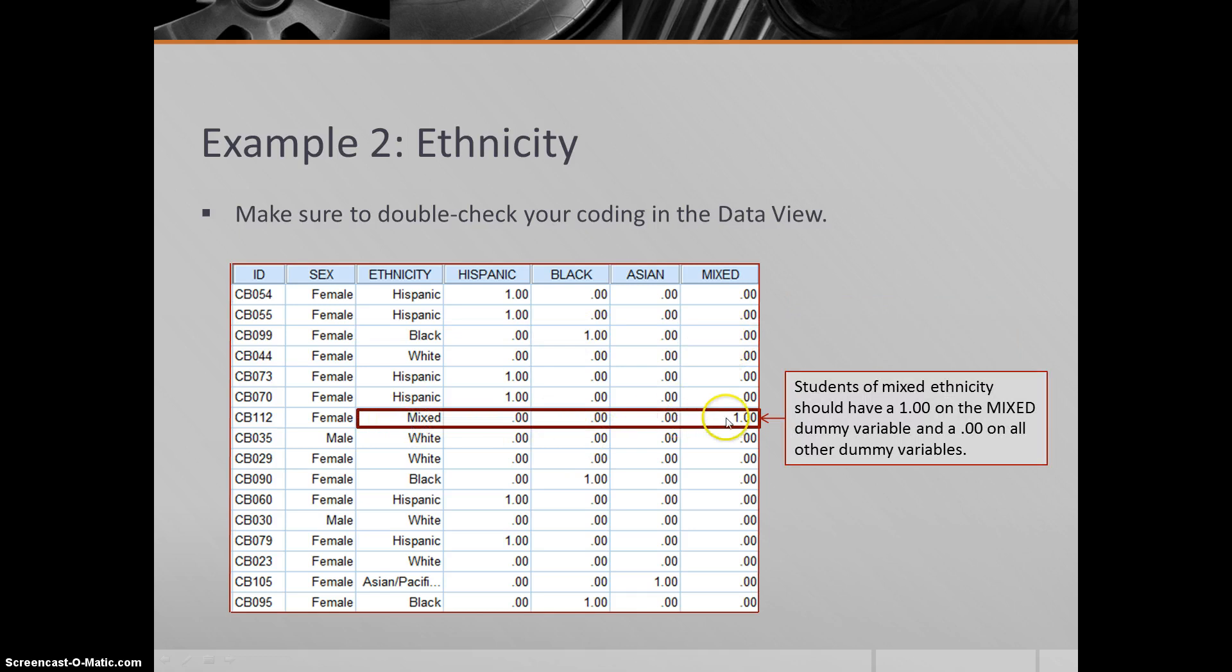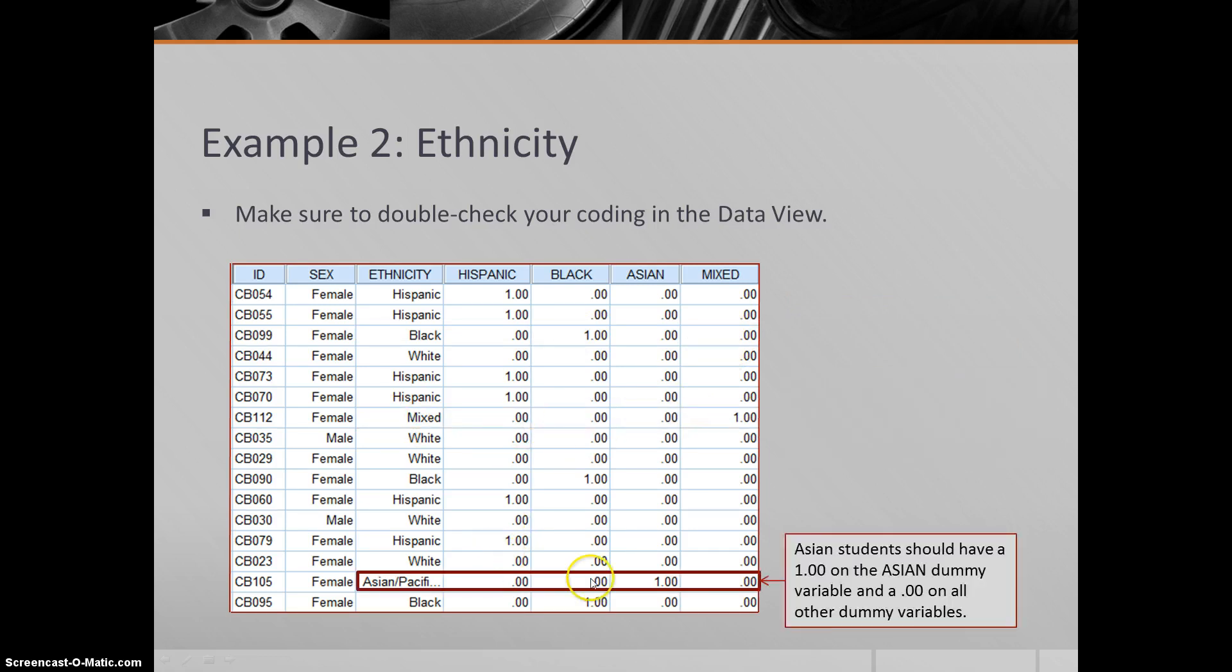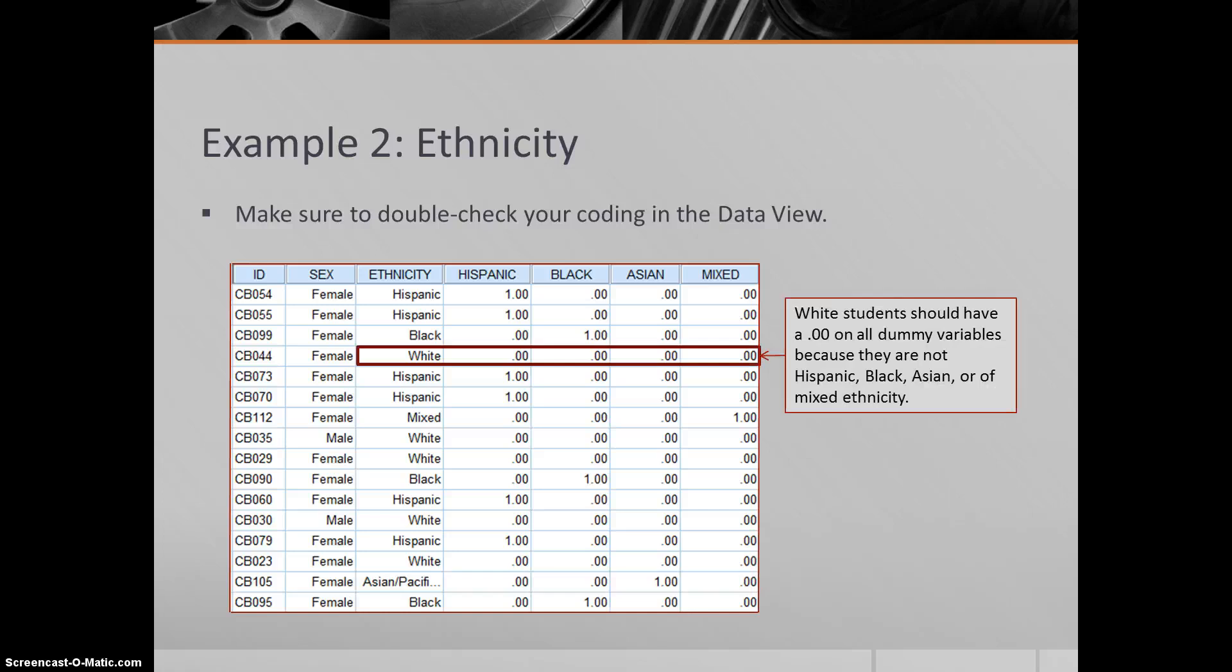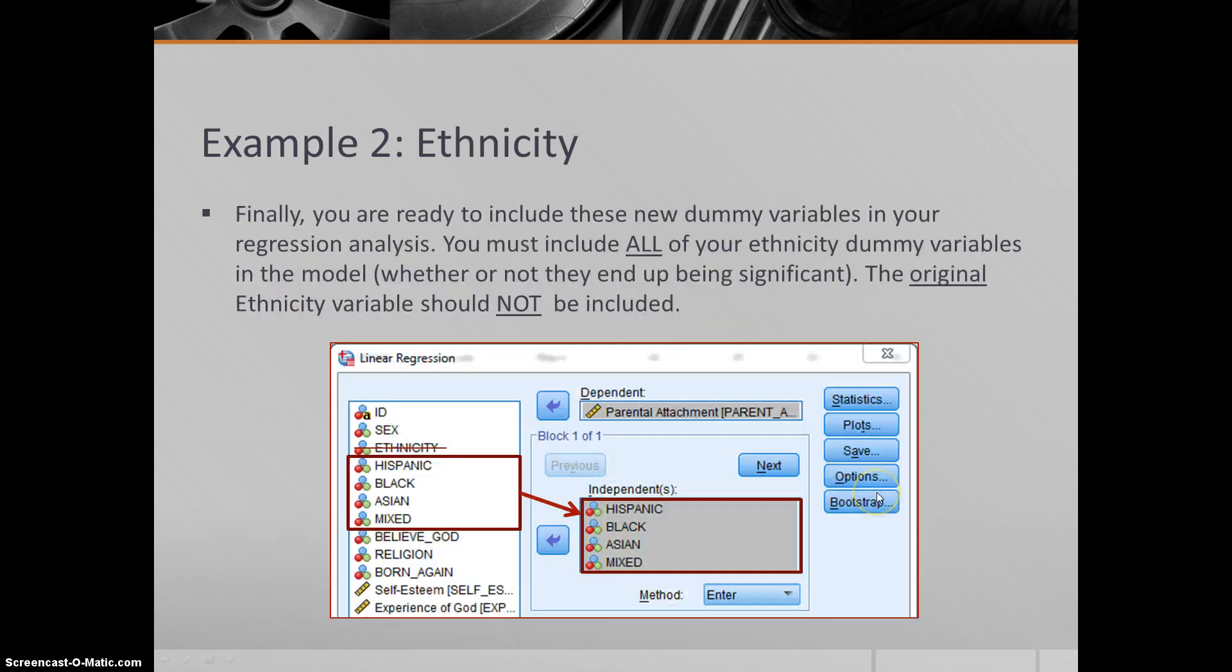The mixed ethnicity, we have yes on mixed: zero, zero, zero. Asian Pacific, yes on Asian: zero, zero, zero, because they're not Hispanic, black, or mixed. You might be thinking, well, what about the white students? How do we know what's going on with them? We'll take a look here. They have zero, zero, zero, zero. So we identify the white students by four zeros because they're not Hispanic, not black, not Asian, and not of mixed ethnicity. That's how we can figure out the difference between these five groups using only four different variables—dummy variables.